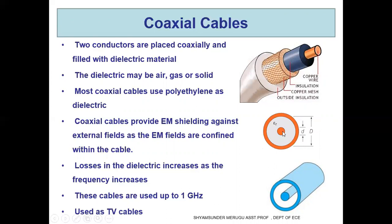The structure of a coaxial cable consists of an inner conductor, a dielectric material (insulating material), and an outer conductor. The diameter of the inner conductor is d, the diameter of the outer conductor is D, and the dielectric material has permittivity epsilon r. The two conductors are placed coaxially and filled with dielectric material, which may be air, gas, or a solid. Most coaxial cables use polyethylene as a dielectric.